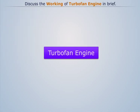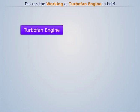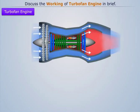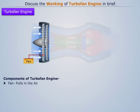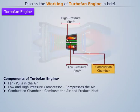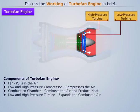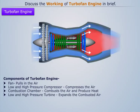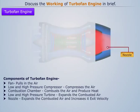A typical two-spool turbofan engine consists of various parts, prime among which are: Fan, whose function is to pull in the air; Low and high pressure compressor, whose function is to compress the incoming air; Combustion chamber, whose function is to combust the air; High and low pressure turbine, whose function is to expand the gas and develop the power; and Nozzle, whose function is to further expand the gas and increase its exit velocity.